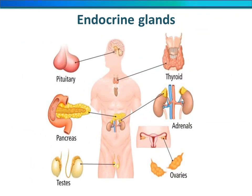We will now study the most important endocrine glands in our body. First: the pituitary gland. Second: the thyroid gland. Third: the pancreas. Fourth: the adrenal gland. Fifth: the testes and ovaries.